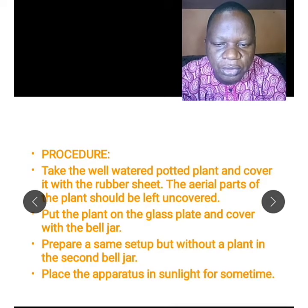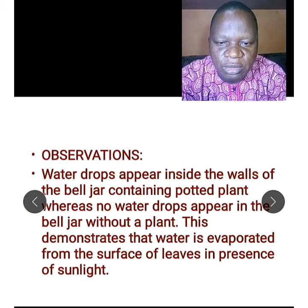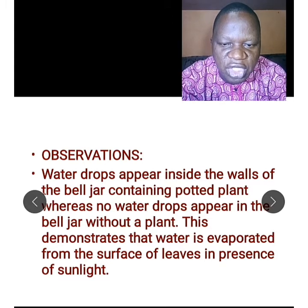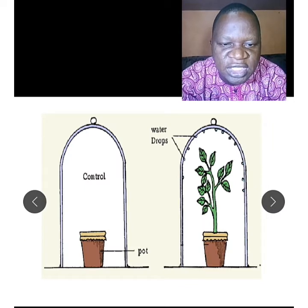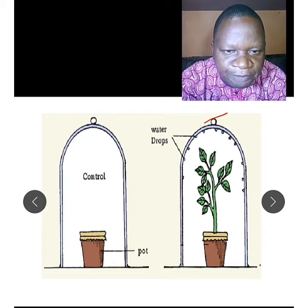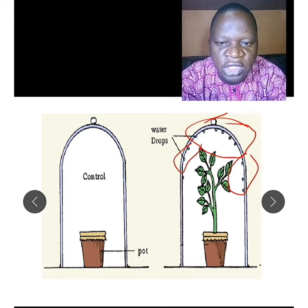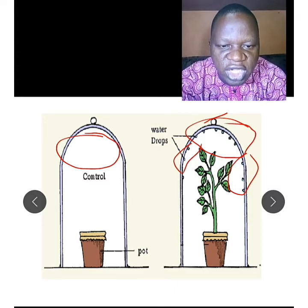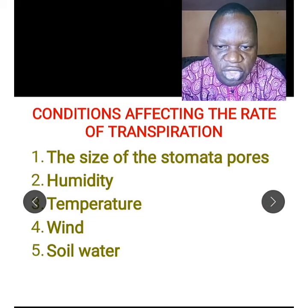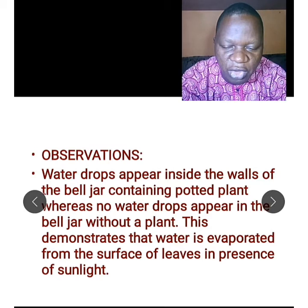Place both apparatus in sunlight for some time. After some time, water droplets appear on the inside walls of the bell jar containing the potted plant, whereas no droplets appear in the jar without the plant. This shows that the water appearing on the bell jar comes from the leaf. The absence of droplets in the control confirms that transpiration takes place through the leaf of the plant.